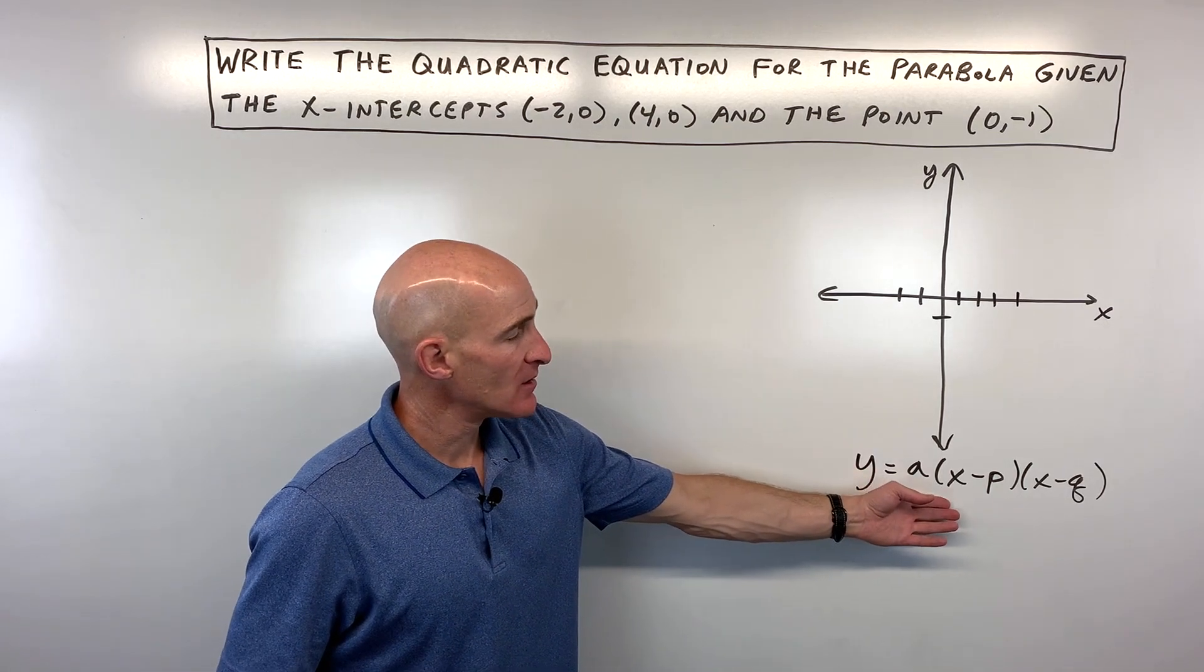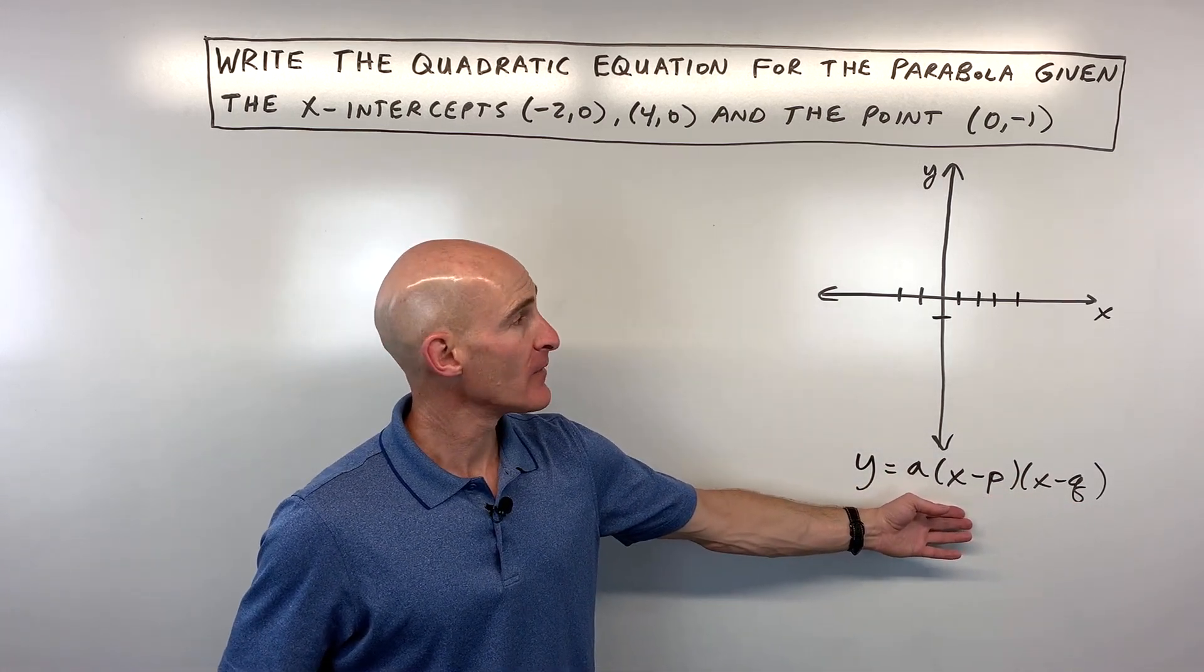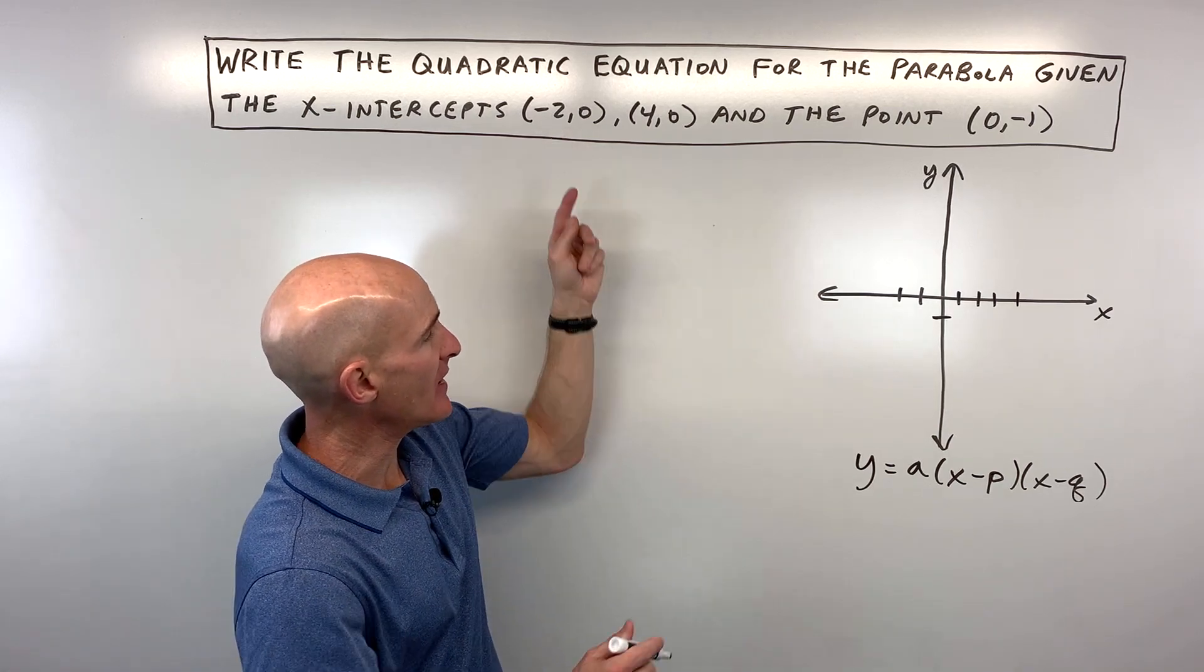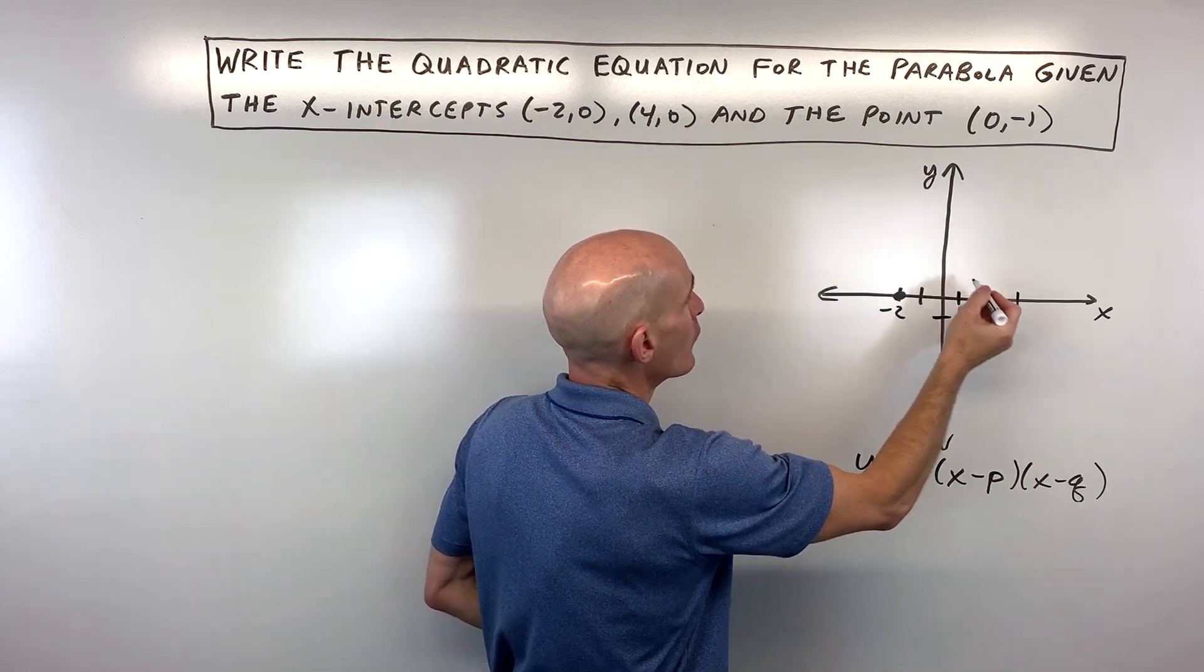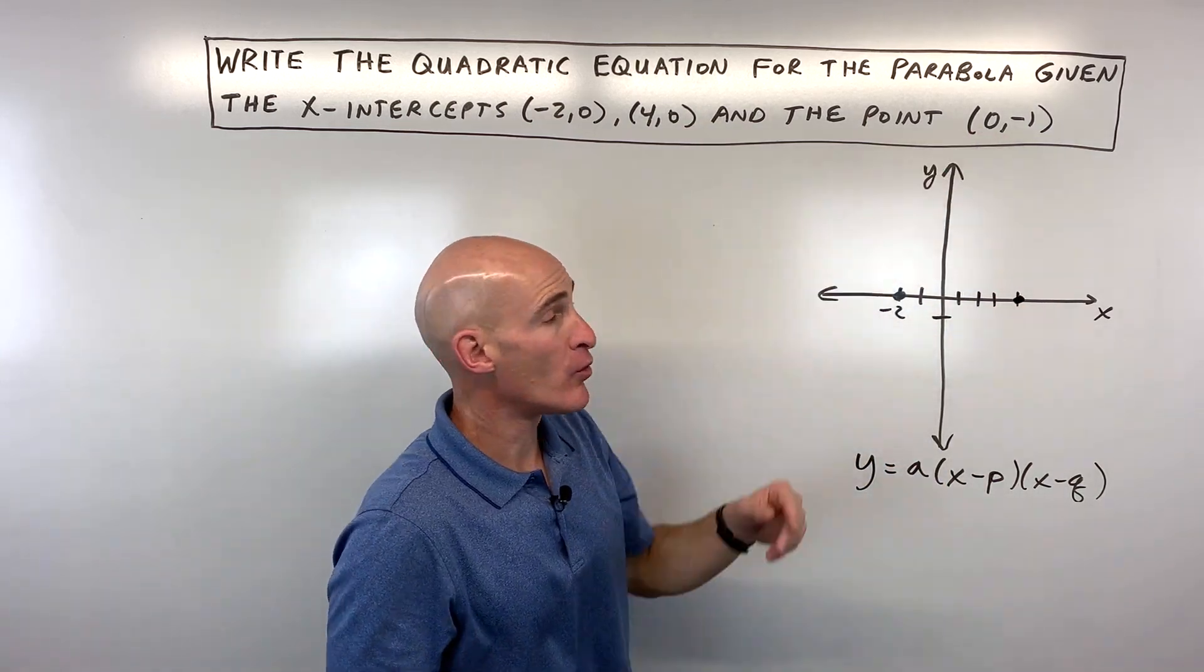So we're going to be working with this intercept form right here, which you can see is like a factored form. And if we want to graph this just to get a feel for what it looks like, we can see it's crossing here at negative 2, 0 on the x-axis, and also at 4, 0, so those are two x-intercepts, and we know it's going through the point.